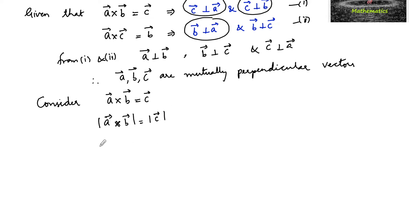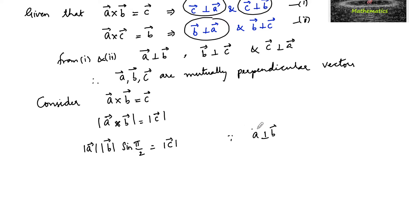By the definition of cross product, we can write mod a times mod b times sine of the angle between the two vectors. Since a is perpendicular to b, the angle between a and b is 90 degrees, which is equal to mod c. So sin 90 is 1, giving mod a into mod b is equal to mod c. Mark this as equation 3.